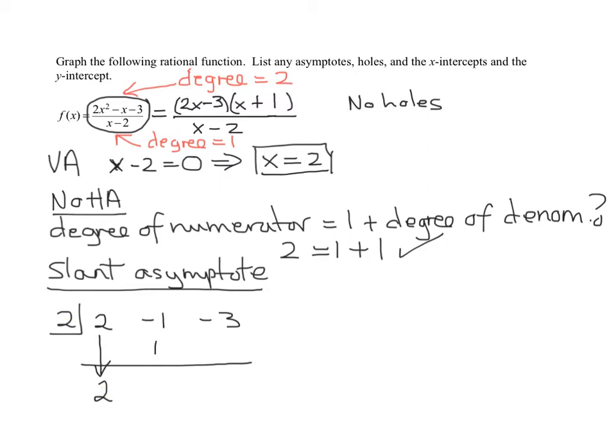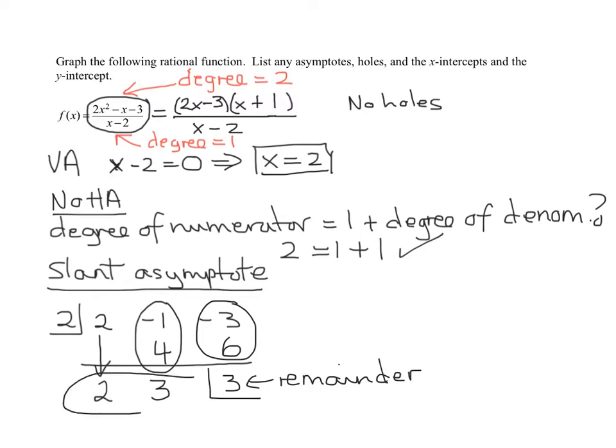We bring down this 2, and then we multiply this 2 by this 2. 2 times 2 is 4. Write the answer here. Add these two numbers up, 4 minus 1 is 3. Now let's repeat. 2 times 3 is 6. 6 minus 3 is 3. Now remember, 3 is the remainder. To find the slant asymptote, we're not interested in the remainder. We're interested in the quotient. Since I started out with a degree 2 in the numerator, my quotient is going to be 2x plus 3. And that is the equation of my slant asymptote, y equals 2x plus 3.